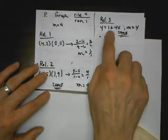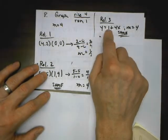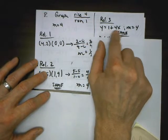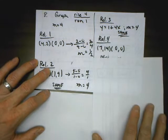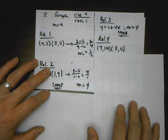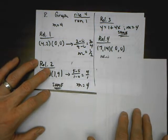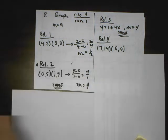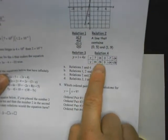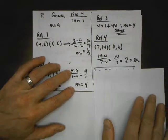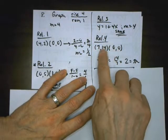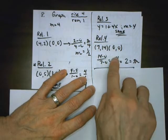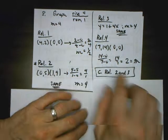Relation 3 is an equation in slope-intercept form, so the slope is whatever's in front of x — the slope is 4. Relation 4 gives a table; I picked coordinates (7, 14) and (0, 0). y minus y over x minus x: 14 over 7 is 2, so the slope is 2. The only two that have the same slope as the graph are relations 2 and 3.